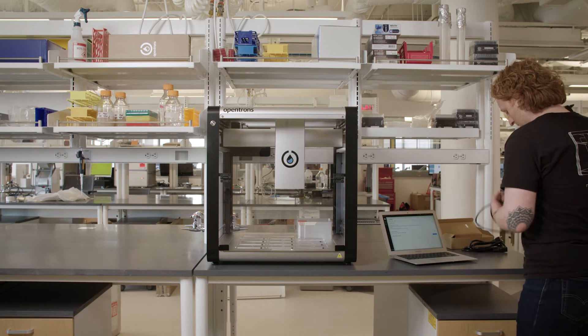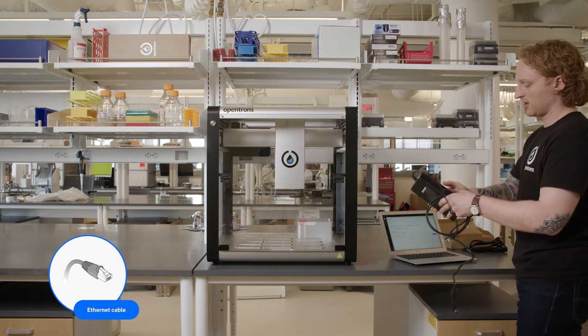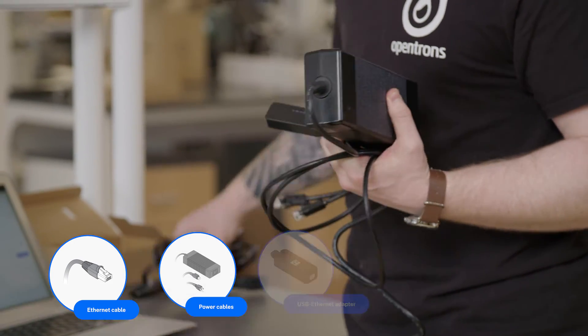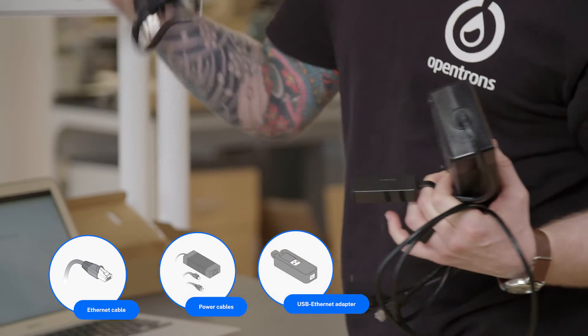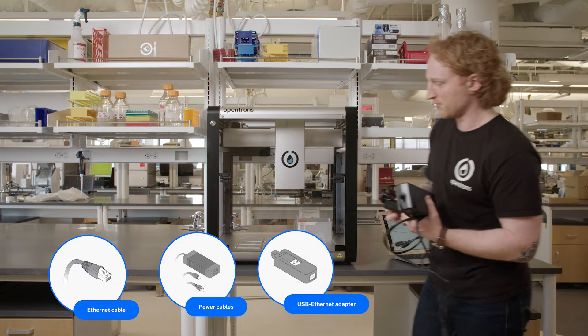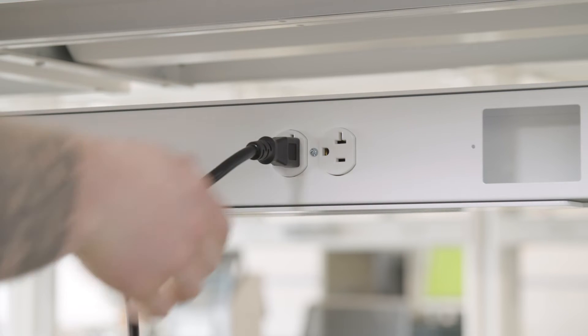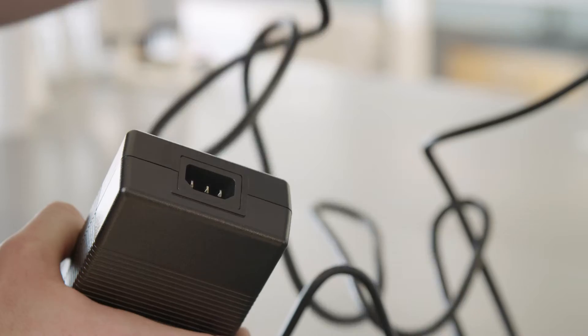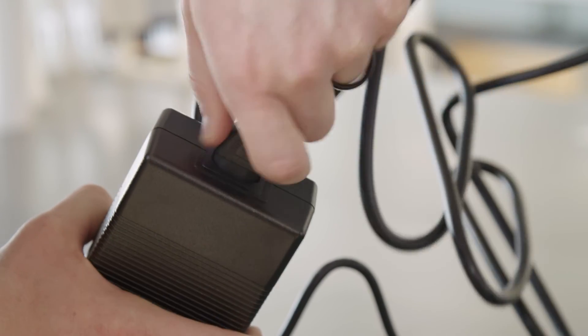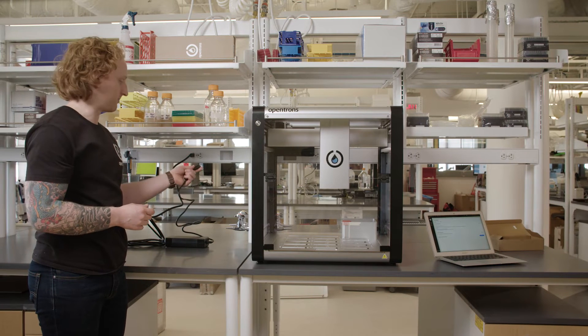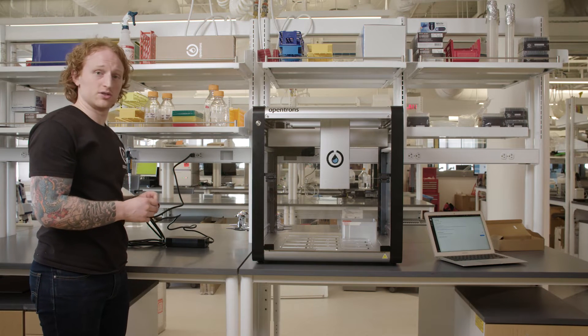I'll need the ethernet cable, the power brick, the ethernet to USB dongle, and the IEC cable. First, I'll plug in the IEC cable into the outlet. Next, I will plug in the IEC cable into the power adapter, power brick. Then I will make sure to plug in the power brick into the OT2.